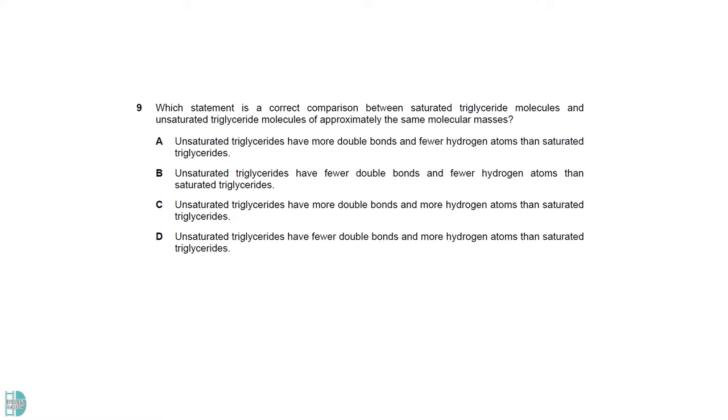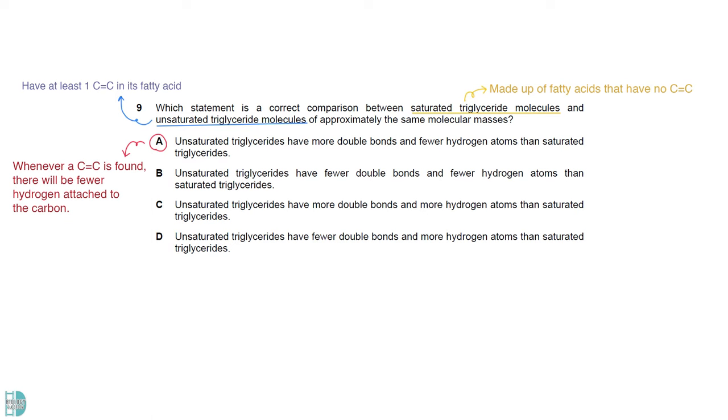Saturated triglyceride molecules are made up of fatty acids that have no carbon-carbon double bond, while unsaturated triglyceride molecules have at least one carbon-carbon double bond. Whenever a double bond is found, there will be fewer hydrogen molecules. So A is the correct statement.